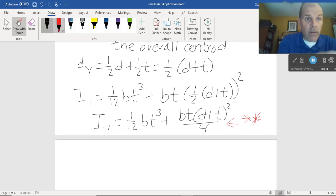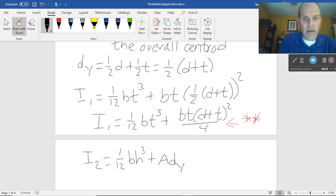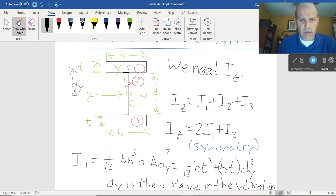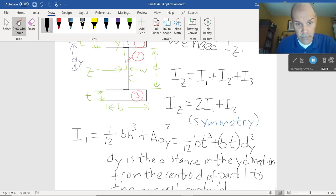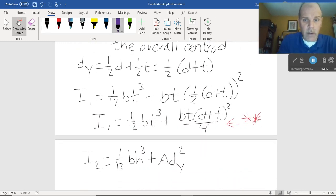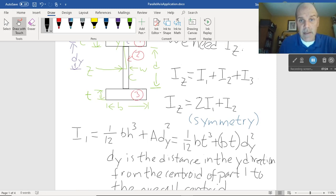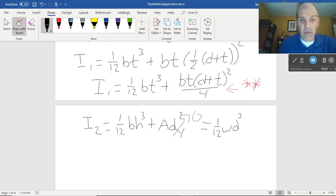Then we have to figure out what I2 is, of course. I2 is, again, 1/12 bh³ plus area times distance in the y direction squared. Well, the thing is, if I look at part 2 for a second, I'm going to scroll up again. Well, the centroid of part 2, by symmetry, is sitting right in the middle, which is right where the centroid of the whole thing is. So, for this one, this is 0, and I2, using the variables that I had, is 1/12 wd³, because I had w as my web thickness, and d as my web height.